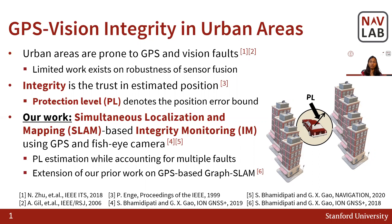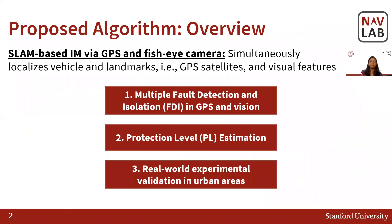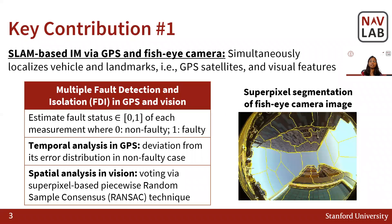This is an extension of our prior work on GPS-based GraphSLAM. In the proposed SLAM-based IAM algorithm, we perform graph optimization to simultaneously estimate the vehicle, GPS satellites, and visual features. The three key contributions of our work are multiple fault detection and isolation, protection level estimation, and real-world experimental validation.